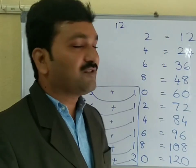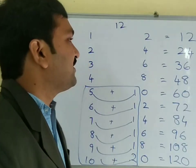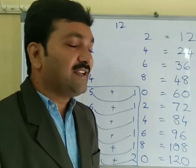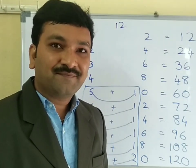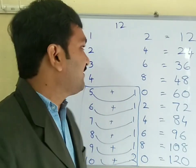See, we got the 12 table: 12, 24, 36, 48, 60, 72, 84, 96, 108, 120. That's all.